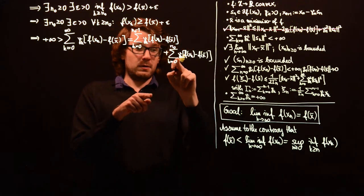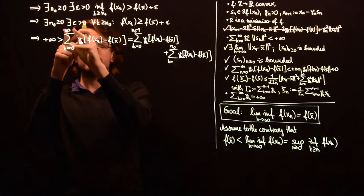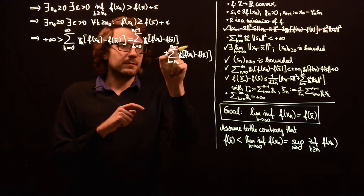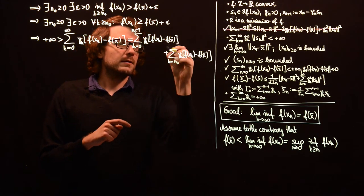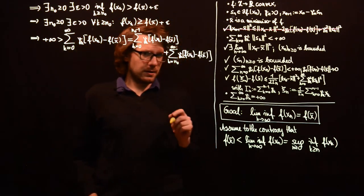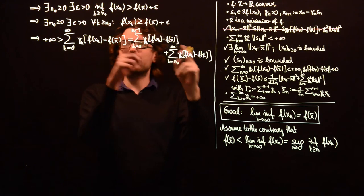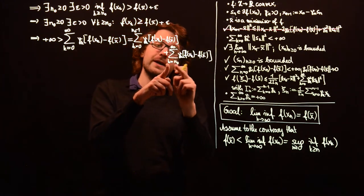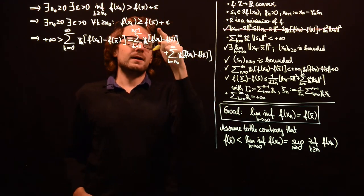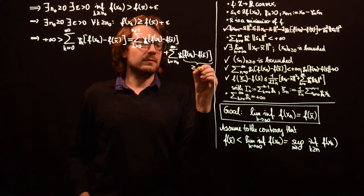We split the sum from 0 to infinity into two sums: from 0 to n₀−1 and from n₀ to infinity. For all k ≥ n₀, we know f(xk) ≥ f(x̄) + epsilon, so this bracket is greater or equal to epsilon.